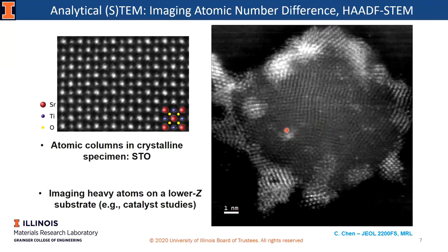If your sample has multiple elements with a significant difference between Z numbers, you may be able to identify them using Z-contrast imaging. The first example is SrTiO₃ (strontium titanate) — heavier strontium atoms appear brighter, and lighter titanium atoms appear darker. The second example is a catalyst nanoparticle where heavier platinum decorates lighter copper — you can clearly see where the heavy element atoms are located. However, in the STO case we are missing oxygen atoms, because oxygen is too light. The contrast is proportional to Z², so the weak oxygen signal is covered under the strong glare of the heavy elements.